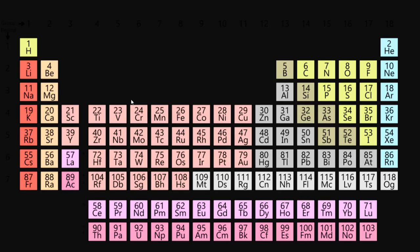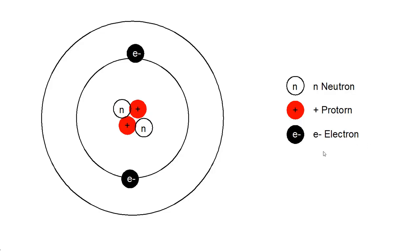Looking at the periodic table, hydrogen had one proton and attracted one electron into its outer shell. Then with two protons it filled that first shell with two electrons — and that uses up the first row. Now we add another shell and start filling it up. We get there by adding a proton and balancing with a neutron.